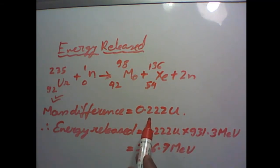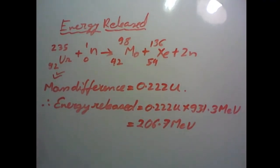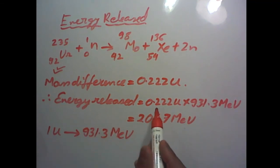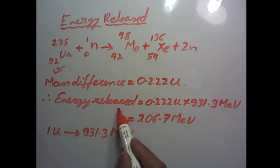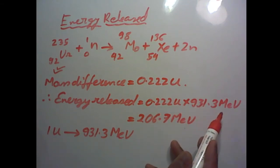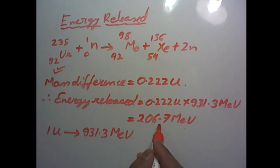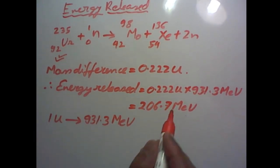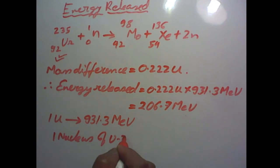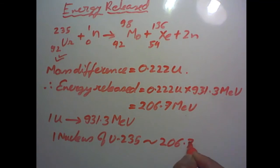The conversion is 1 U of mass when converted into energy gives around 931.3 MeV. So the total amount of energy released in the fission of one nucleus of uranium-235 is 0.222 U multiplied by 931.3 MeV, which equals around 206.7 MeV of energy.